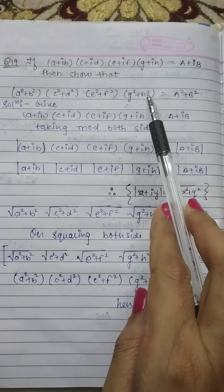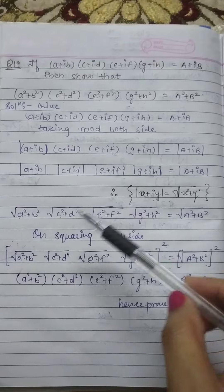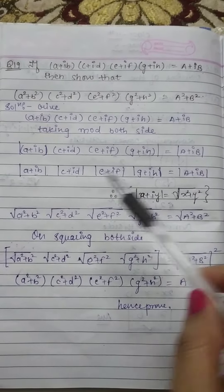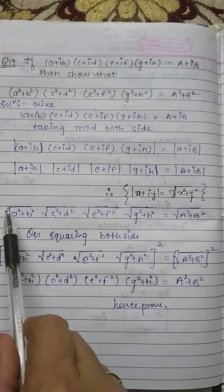Now what do we do? We have to remove the root here. On squaring both sides, we square both sides. So here whole power is 2, and here whole power is 2.